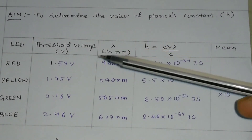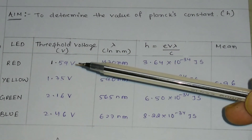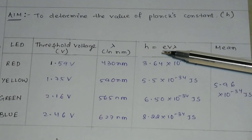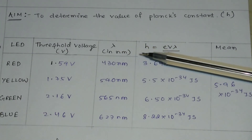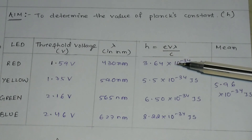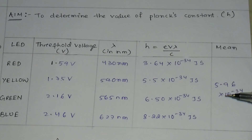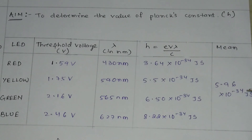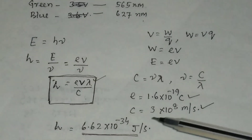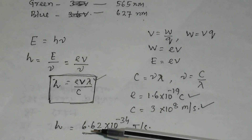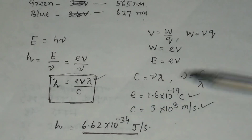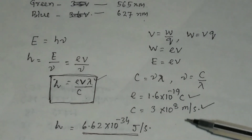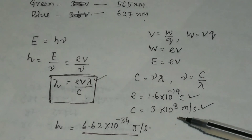After finding the threshold voltage — either from the experiment or from the graph — if you put in the values of threshold voltage, charge of the electron, wavelength, and velocity of light, you will get the value of Planck's constant. Here we have found the value of Planck's constant to be 5.96 × 10⁻³⁴ joule·second. But the actual value of Planck's constant h is 6.62 × 10⁻³⁴ joule·second, so there is some error in this experiment, and you have to calculate that error.